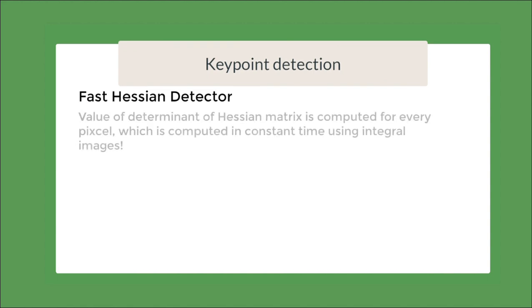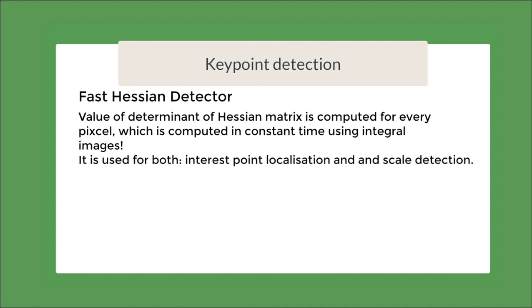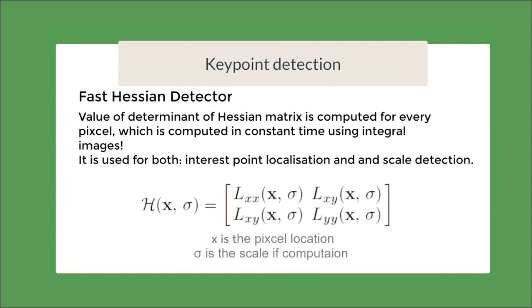As we said earlier, the SURF detector uses the Hessian matrix determinant which is used for both scale detection and interest point localization. Here is the general form of the Hessian matrix for two-dimensional, where each of its component is convolution of image and the second-order Gaussian derivative.